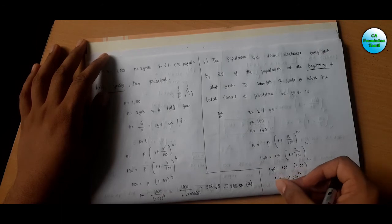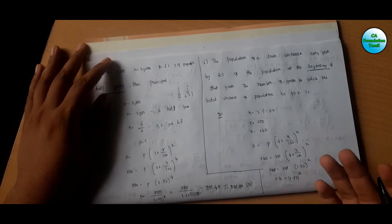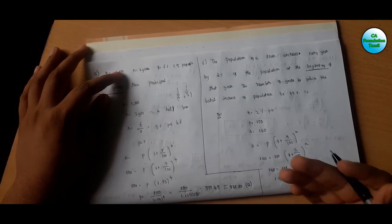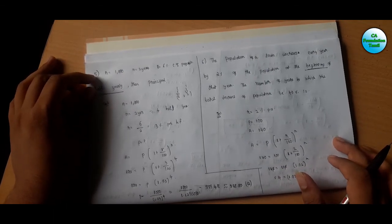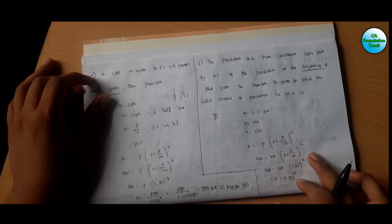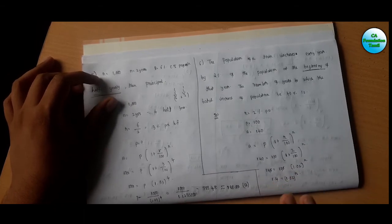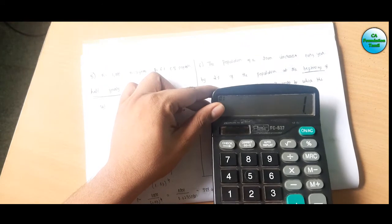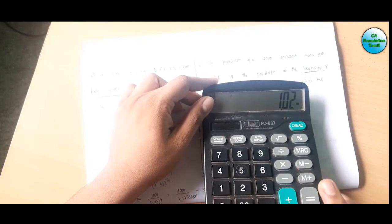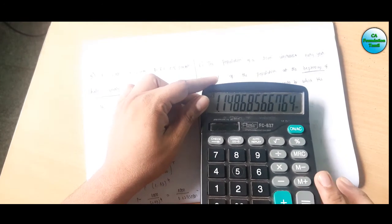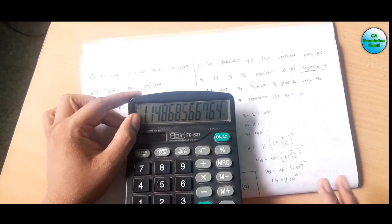Using trial and error: we need (1.02)^n to equal 1.4. Let us try n equals 7: 1.02 multiplied 7 times gives approximately 1.14. Since 1.14 is not equal to 1.4, n equals 7 is not the answer. So we try larger values.